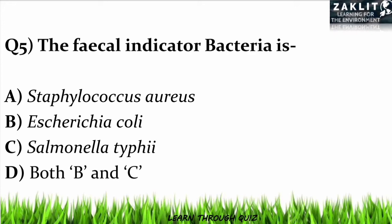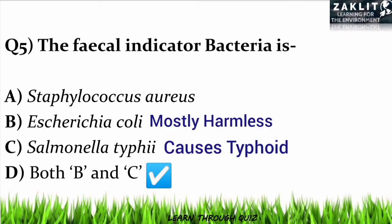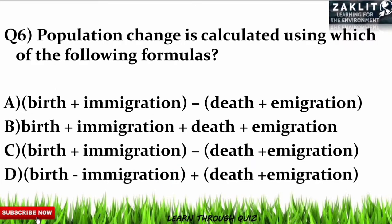The fifth question was: what is the fecal indicator bacteria? The correct option is D — both E. coli and Salmonella typhi — as they can be detected from fecal matter since they are present in the intestine. E. coli is normally present in the intestines of people and animals and is harmless, but Salmonella causes typhoid.